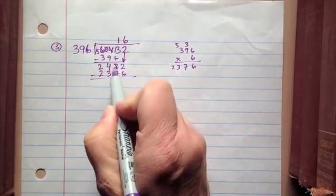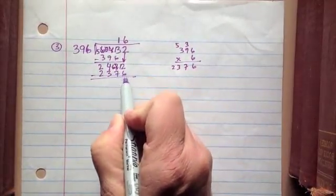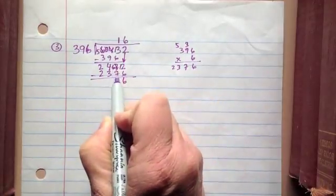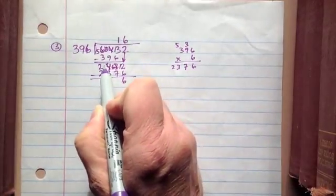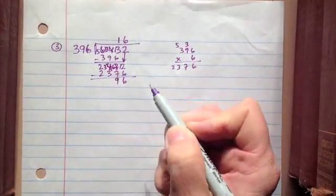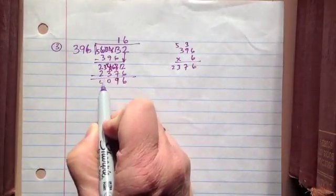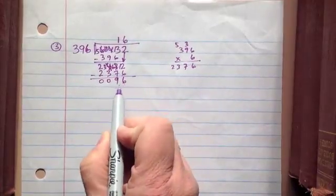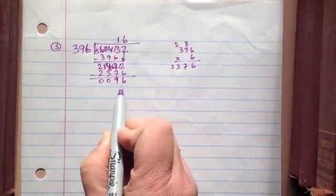2 minus 6 can't do, borrow a 10, 12 minus 6 is 6. 6 minus 7 can't do, borrow a 10, 16 minus 7 is 9. And then 3 minus 3 is 0, 2 minus 2 is 0. So now I have 96 here. I still have some left over, but I don't have any more digits.